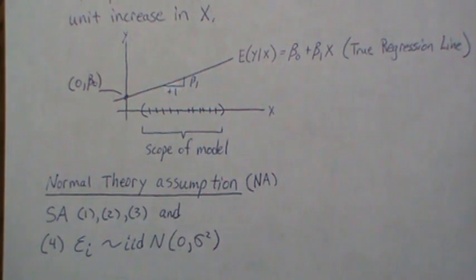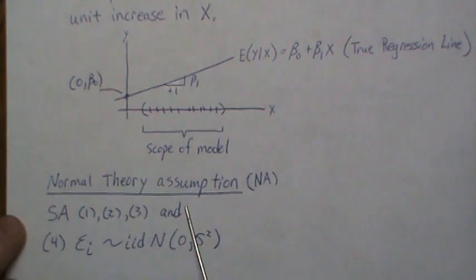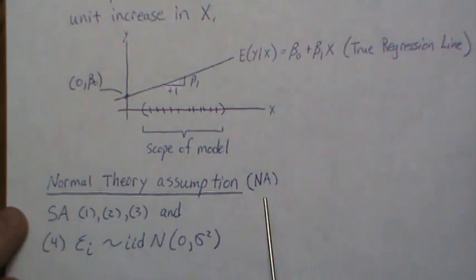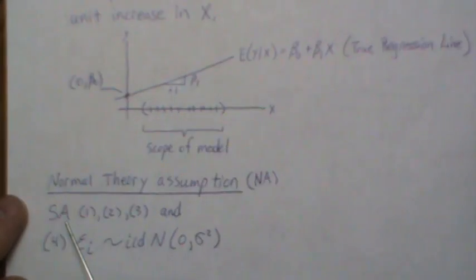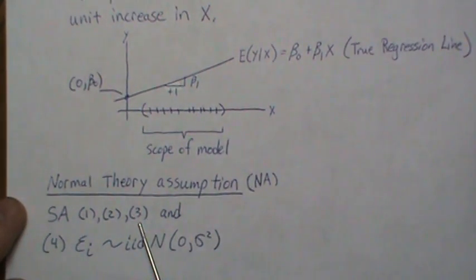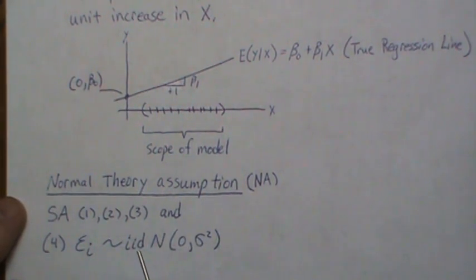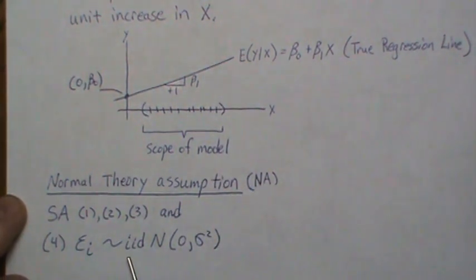Sometimes more assumptions are added beyond the three standard ones. The big addition is the normal theory assumption: we assume SA1, SA2, and SA3 hold, and additionally that the error term epsilon is iid Normal(0, sigma-squared).